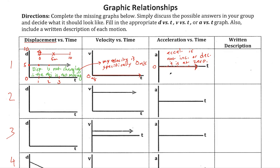Let's take a look at the second example. We have nothing for displacement and nothing for acceleration, so we start with velocity. The velocity looks like it's some constant value - I'll eyeball it at around eight meters per second. At one second it's still eight meters per second, and still eight meters per second after that. So in other words, I am moving, but not speeding up or slowing down.